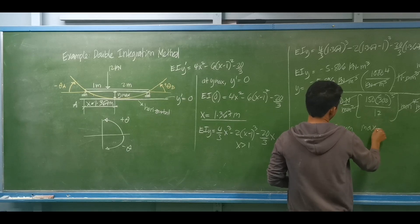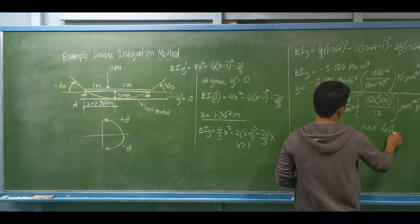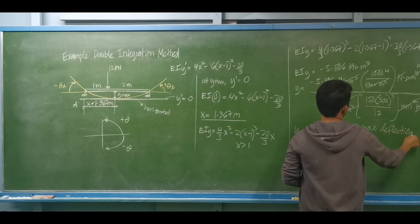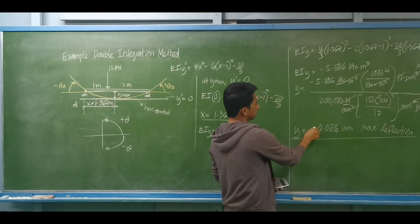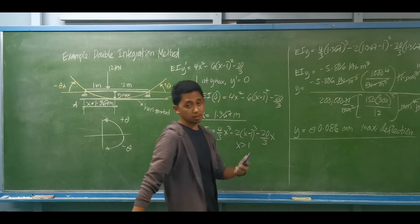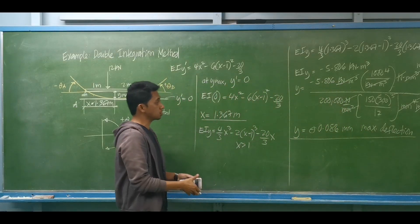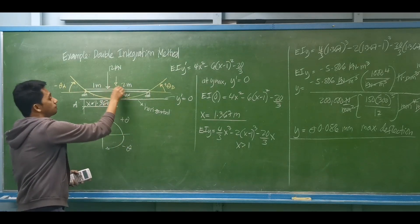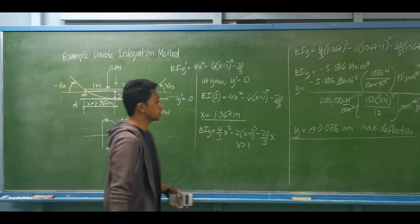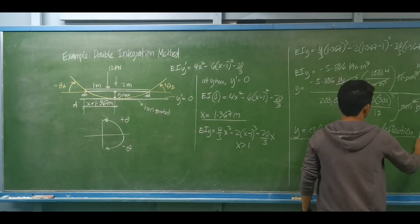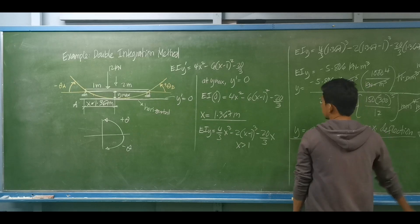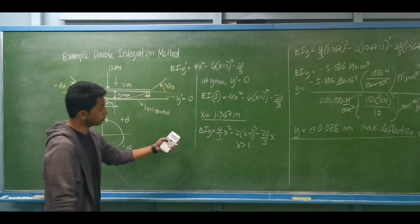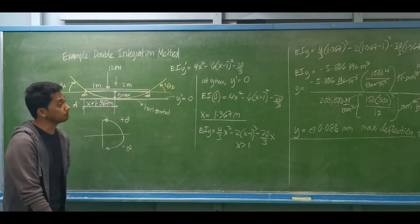So this is our maximum deflection. The negative sign means the deflection is downward. This concludes the example for the double integration method.